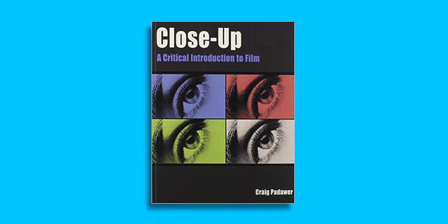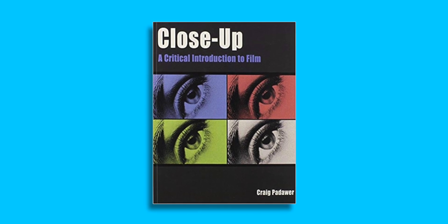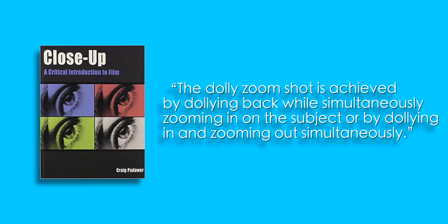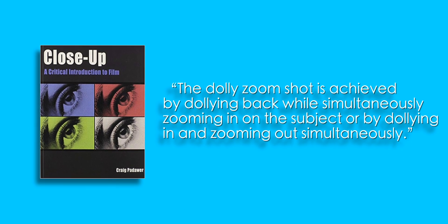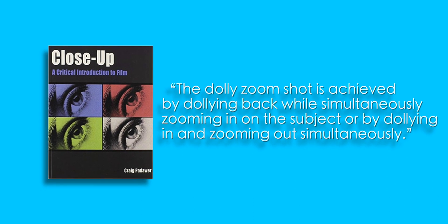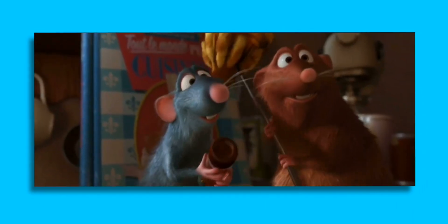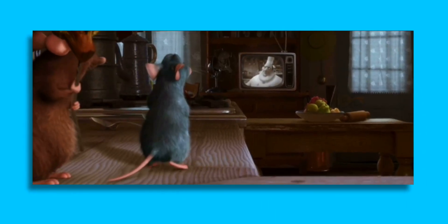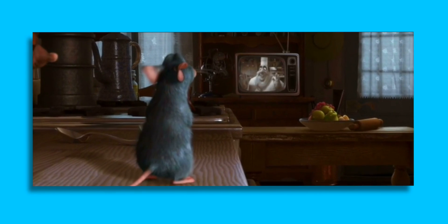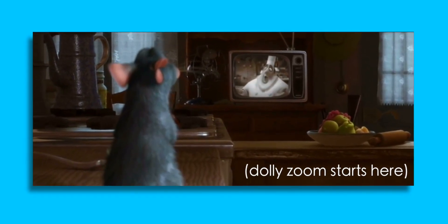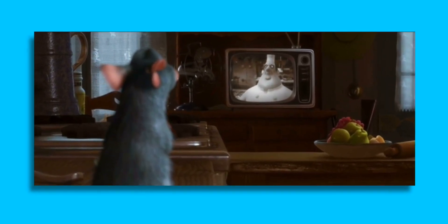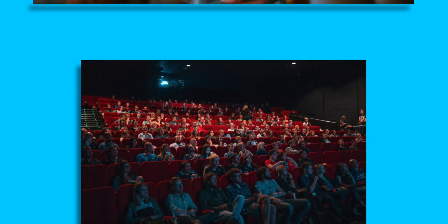One of the simpler explanations on the web is by film critic Craig Paddler. The dolly zoom shot is achieved by dollying back while simultaneously zooming in on the subject, or by dollying in and zooming out simultaneously. Basically, it is the result of both the zooming of the lens and the dolly of the camera moving opposite to that lens. These two effects cancel each other out, causing the main subject to stay in relatively the same position, with the image's field of view and focal length shifting.